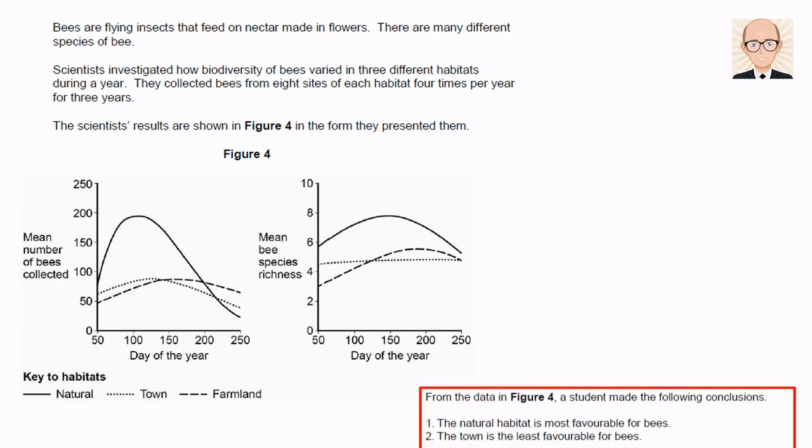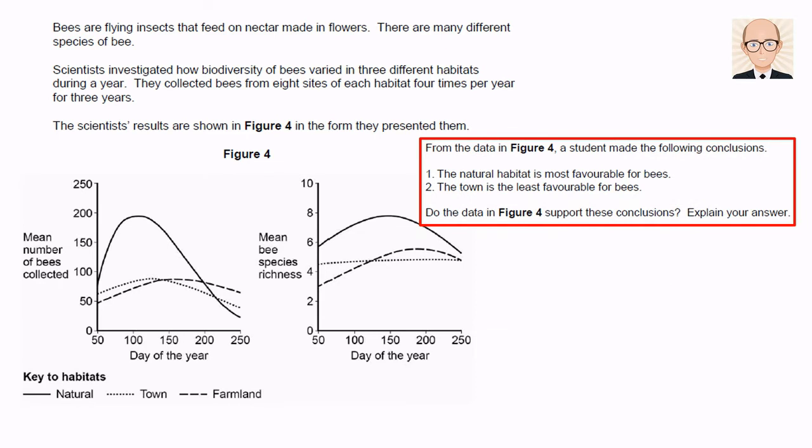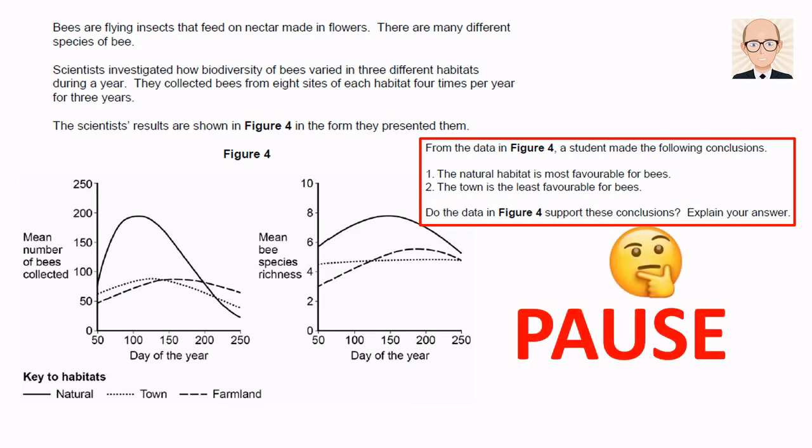The question asks whether a student's conclusions about the data are correct. Is it correct that the natural habitat is the most favourable, and that the town habitat is the least favourable to bees? Click pause here and try and write an answer for yourself before hearing what I have to say about it.